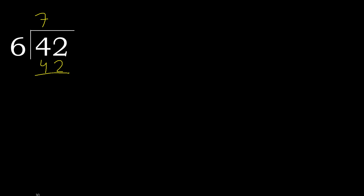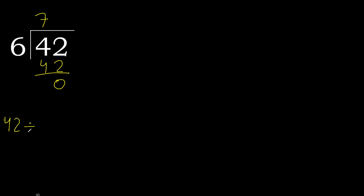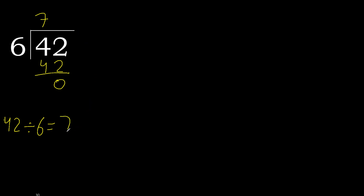42 minus 42 is 0. The remainder is 0. Therefore, 42 divided by 6 is 7.